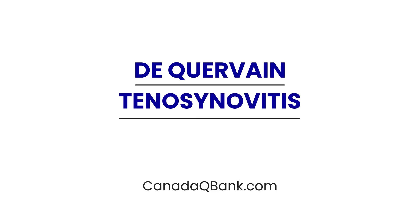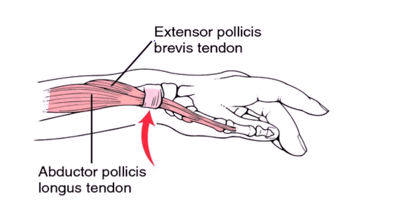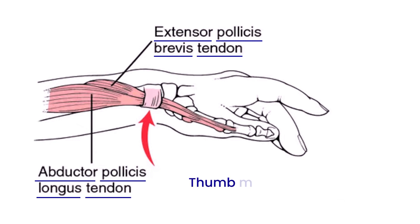De Quervain's tenosynovitis is the topic, and this condition involves tendons of two muscles: the extensor pollicis brevis and the abductor pollicis longus. These two muscles have associated tendons that are labeled in this diagram, and they are involved in thumb motion.